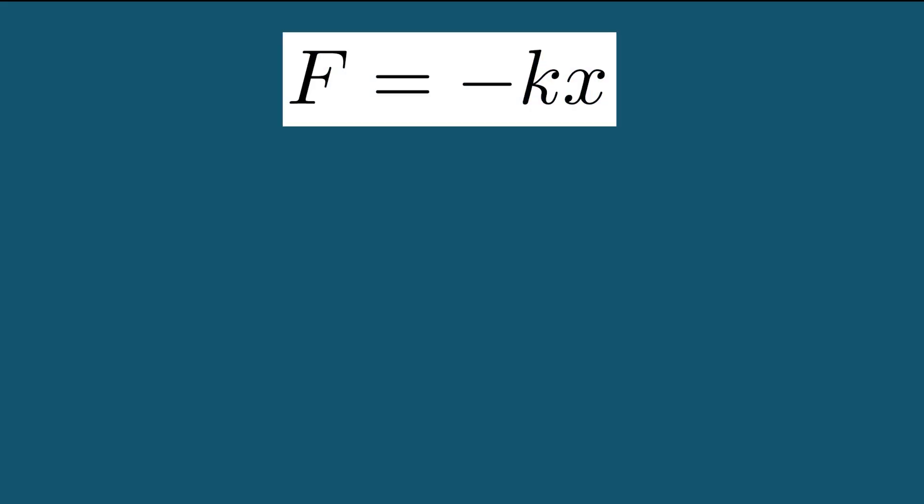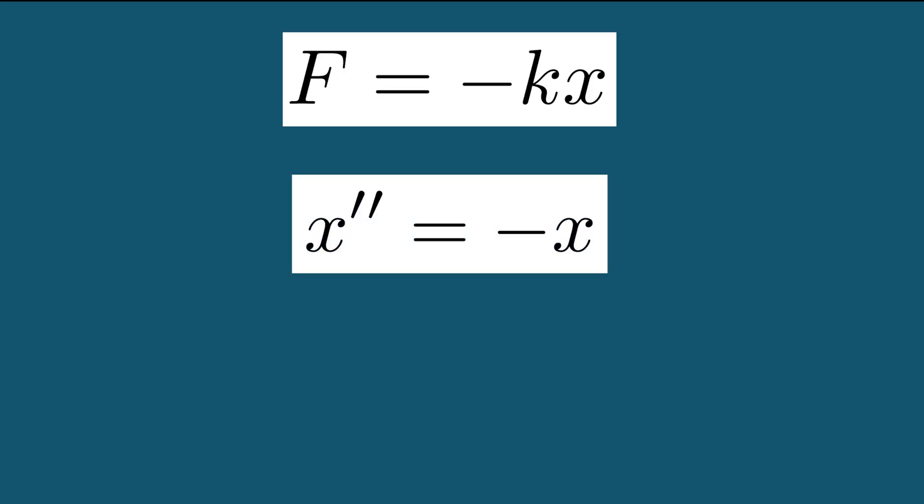Now, let's make a few simplifying choices. We'll assume that the mass is exactly 1, and that k is equal to 1. Since force is equal to mass times acceleration, we can rewrite our spring equation as x double prime equals minus x.